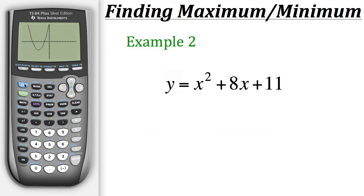So let's go to that. We'll hit second trace. Now instead of doing option 4 for maximum we'll go up to option 3 for minimum.